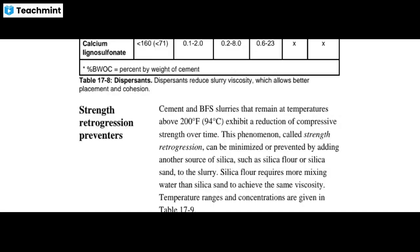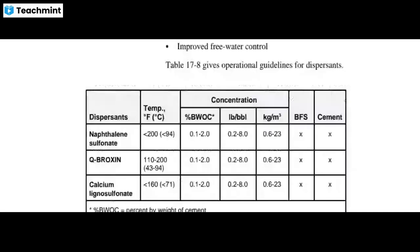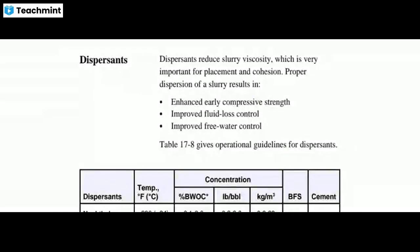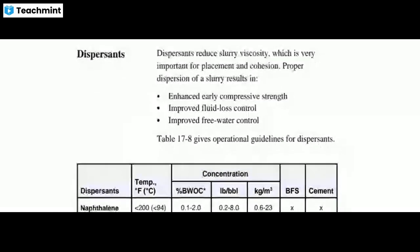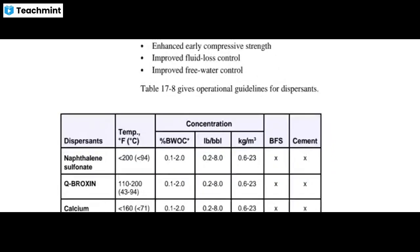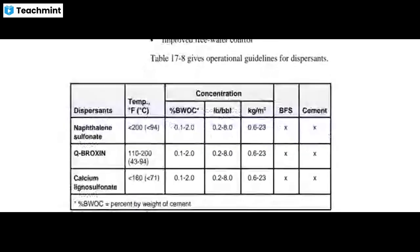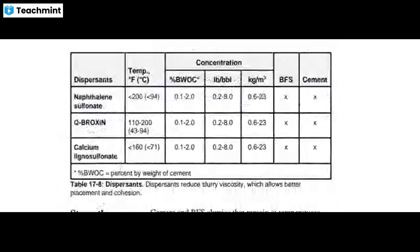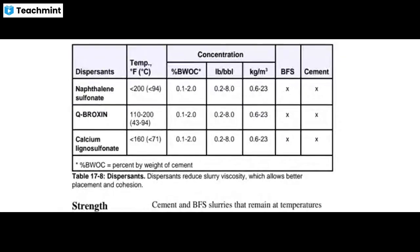Dispersants reduce the slurry viscosity, which is very important for placement and cohesion. Proper dispersion of slurry also enhances early compressive strength and improves fluid loss control and free water control. The operation guidelines for dispersants include naphthalene sulfonate, Q-broxine, calcium lignosulfate, with temperature ranges shown.